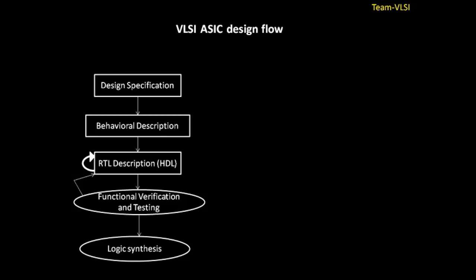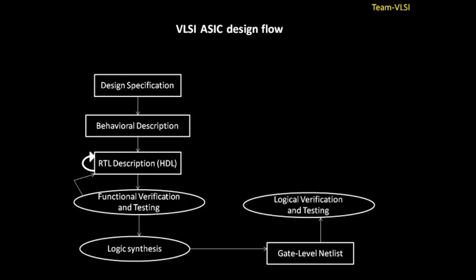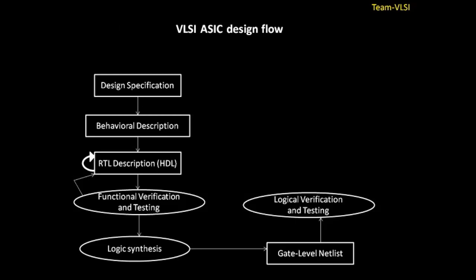After logic synthesis we get a gate-level netlist. This gate-level netlist is then verified — that is called logical verification and testing. If in logical verification there is some problem not meeting our design specification, we go back to the RTL description and make changes, then go through logic synthesis and logical verification again in a cycle until logical verification is completed.